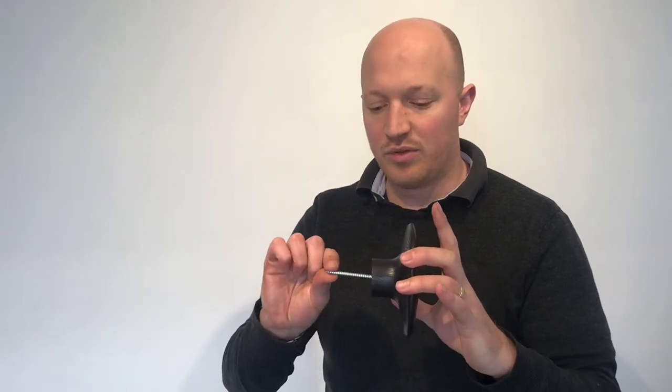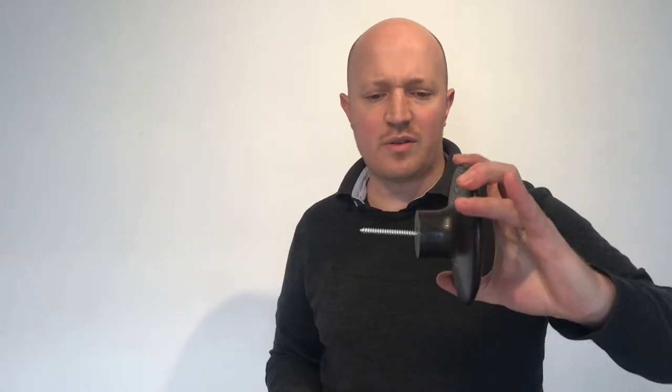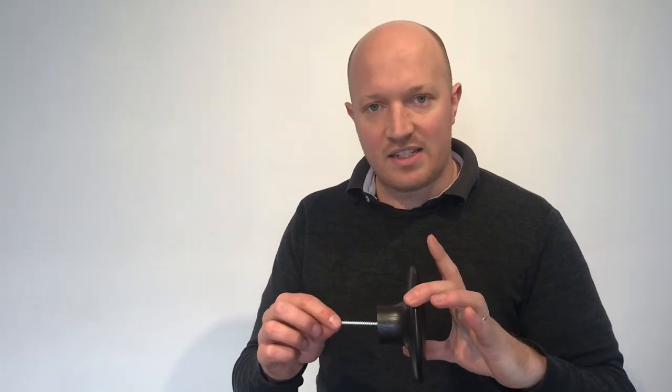Until recently there hasn't been anything out there that has actually allowed us to put this thread, which I think is about a 14 gauge thread, into any point along a plasterboard wall. The problem with that is it means we've been restricted to where we can place these, which is kind of against the design philosophy of the product in the first place.